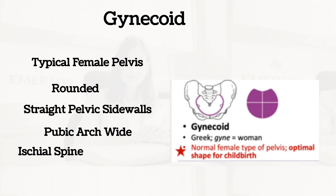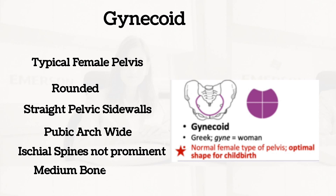The ischial spines are not prominent. The bone structure is medium — not heavy. Compared to the android, the gynecoid is medium while the android is heavy in terms of bone structure. So those are the features of the gynecoid.